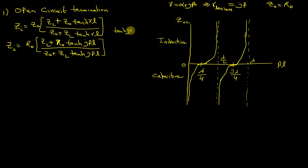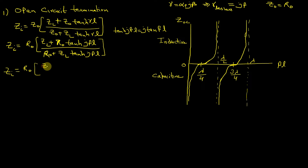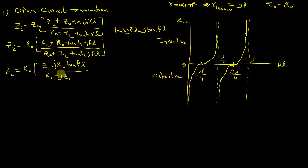We also know that tanh(jβL) = j·tan(βL). So substituting, since Z₀ = R₀, the input impedance for a lossless line becomes Zi = R₀ · (ZL + jR₀·tan(βL)) / (R₀ + jZL·tan(βL)).